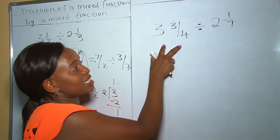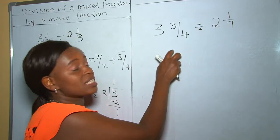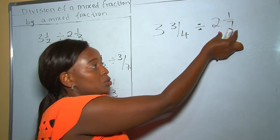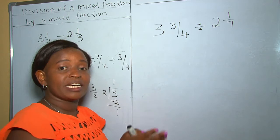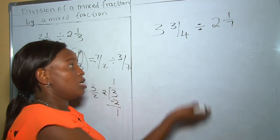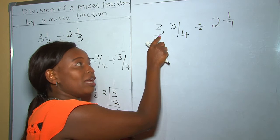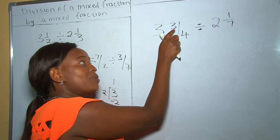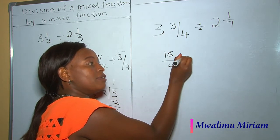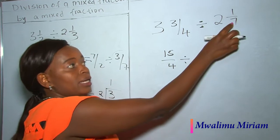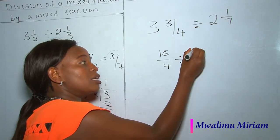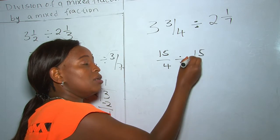In our second example, we still have a mixed fraction divided by a mixed fraction. The first step is changing the mixed fractions into improper fractions. So 4 times 3 is 12, 12 plus 3 is 15, all over 4. Divided by: 7 times 2 is 14, 14 plus 1 is 15, over 7.